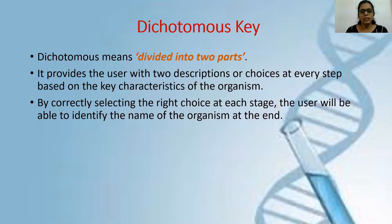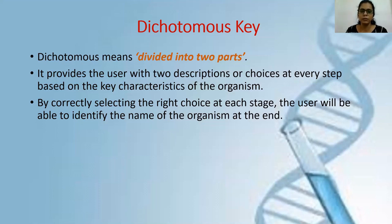By correctly selecting the right choice at each stage, the user can easily identify the organism — identify its name and also identify which particular group it belongs to. I will show you some examples of dichotomous key so you will be able to understand in a much better way. These examples are taken from the past papers of IGCSE board exams, so it will be helpful for you to understand what type of questions are asked on this particular topic.